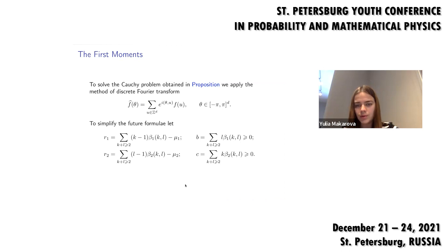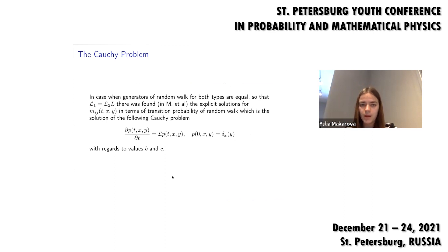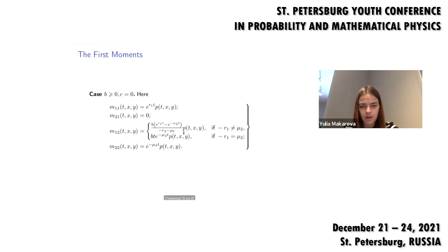We find the solutions for the first moment with regard to values B and C, which are non-negative. In the simple case where the generators for both types are equal, explicit solutions for the first moment are found in terms of transition probabilities of the random walk. The transition probability is the solution of the corresponding Cauchy problem. With regard to values B and C, we can find the solutions for the first moments in different cases.